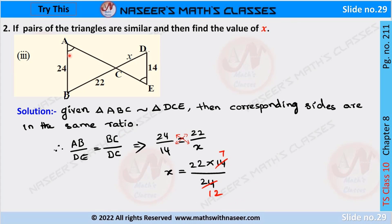Two triangles are similar, given ABC is similar to triangle CDE, and we have to find the value of x. We already know that if two triangles are similar, then the corresponding sides are in the same ratio. So we can write AB by DE is equal to BC by DC, which is equal to 24 by 14 is equal to 22 by x, after substituting the given values.